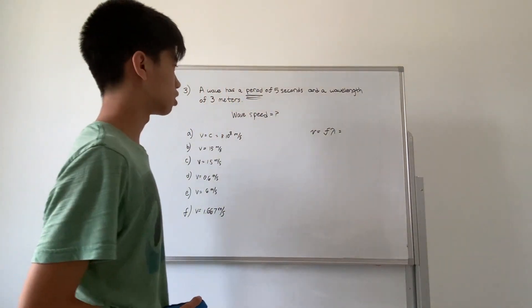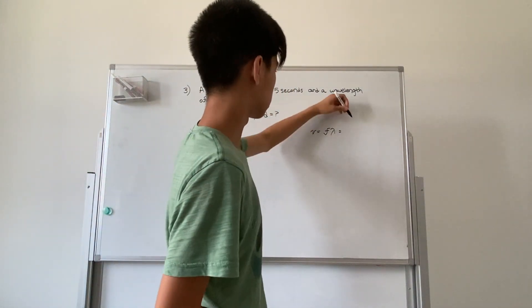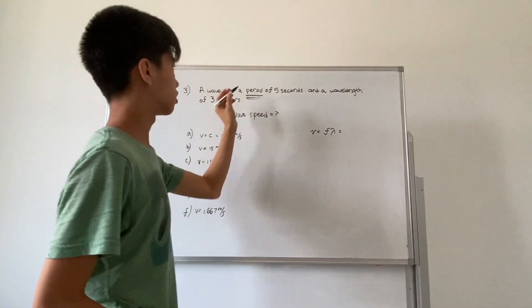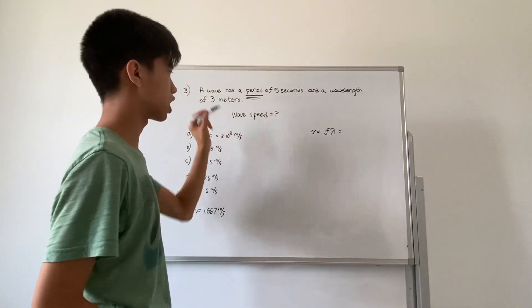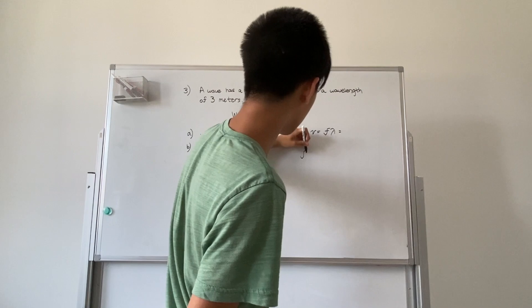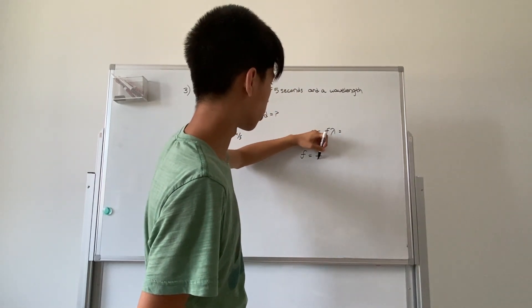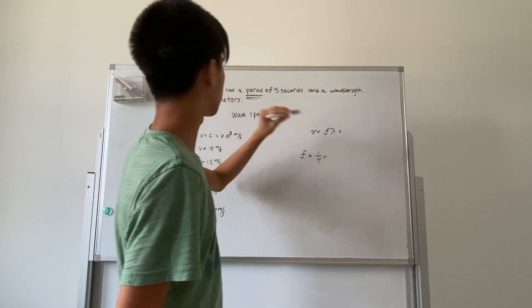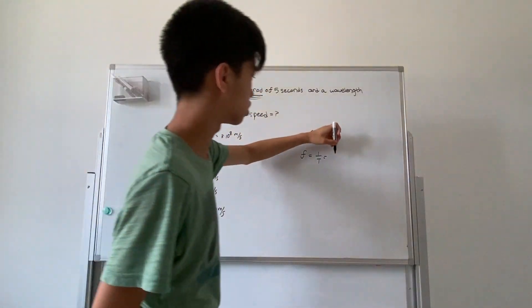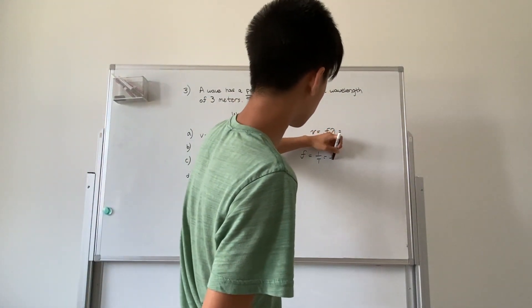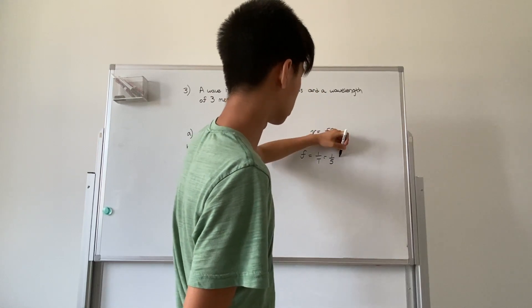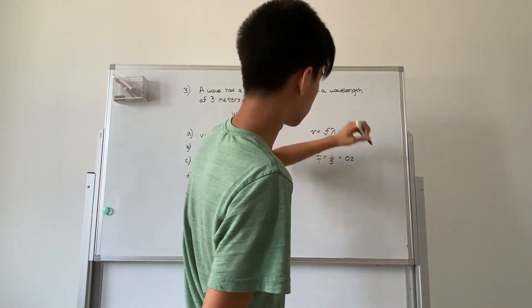Our velocity we don't know, but we know our period and our wavelength. If you recall from the lecture notes, frequency equals one over the period, and our period is five seconds. So we have one over five as a frequency, or 0.2 hertz.